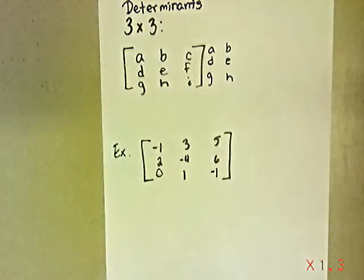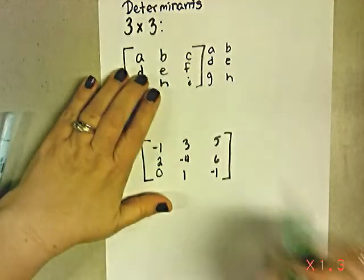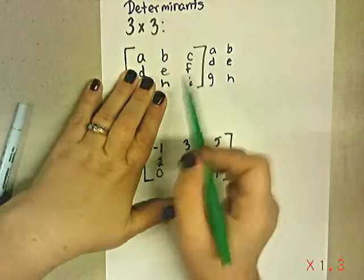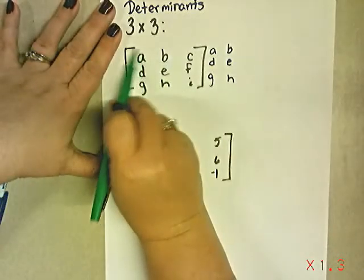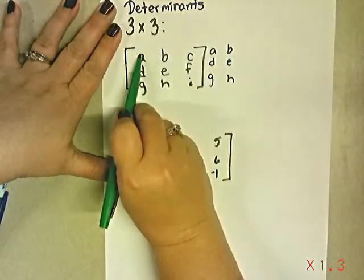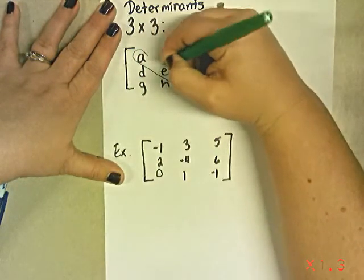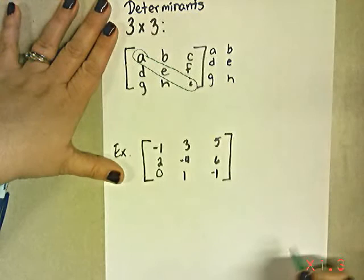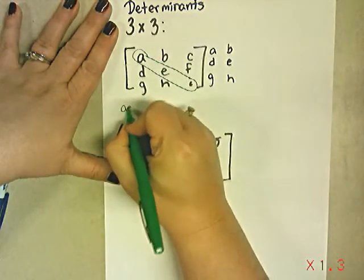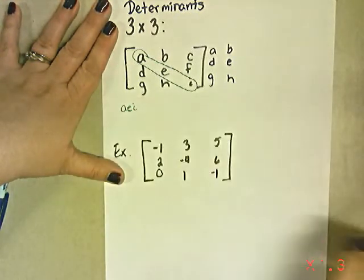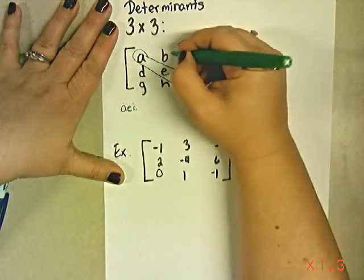Then you're going to go back to doing the same thing that we were doing yesterday. You're going to start in the upper left-hand corner, and you're going to do the diagonal. So the diagonal starting at a is going to include e and i. So this is our first diagonal. You're going to multiply those together. So a times e times i. But we're not done with diagonals. We still have some more.